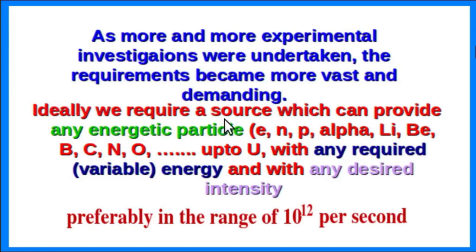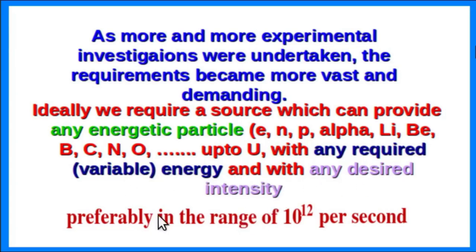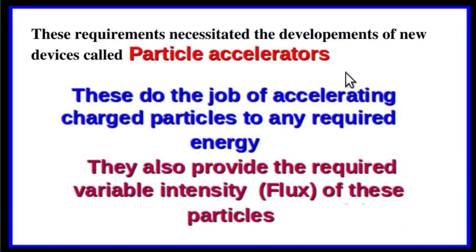Ideally, we require a source which can provide any energetic particle — electrons, neutrons, protons, alphas, lithium, beryllium, etc., up to uranium — with any desired variable energy and with any desired intensity, preferably in the range of about 10 to the power 12 per second or even higher. These requirements necessitated the development of new devices called particle accelerators, which accelerate charged particles to any required energy and also provide the required variable intensity, that is, flux of these particles.